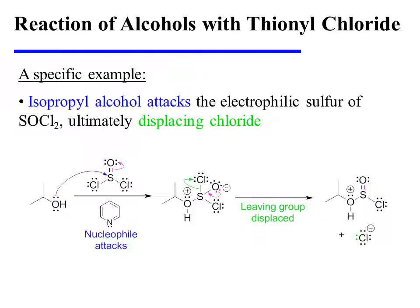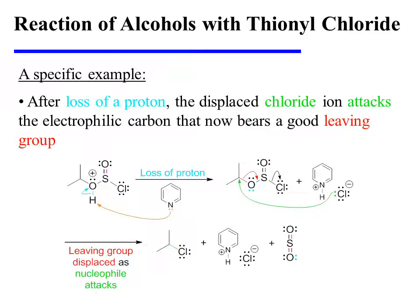In this specific example, isopropyl alcohol attacks the electrophilic sulfur of thionyl chloride. The pi-electrons are displaced onto oxygen as a lone pair, and that lone pair then collapses to ultimately displace chloride. The reaction continues with the removal of a proton by pyridine, which neutralizes the charge on the oxonium ion.